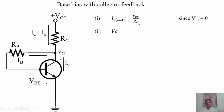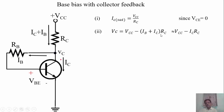Now let us find VC, the collector voltage. VC is equal to VCC minus the current through the resistance times the resistance. The current through RC is IC plus IB, so VC equals VCC minus (IB + IC) times RC. Since IB is very small compared to IC, we can approximate VC as VCC minus IC times RC.